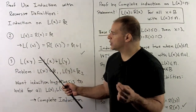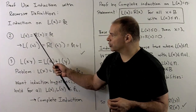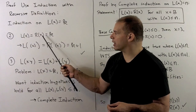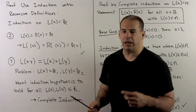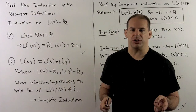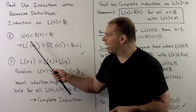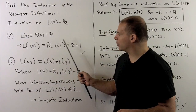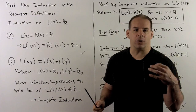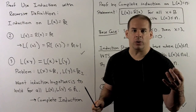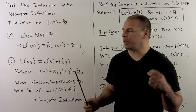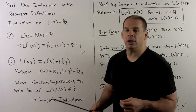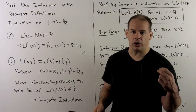For rule two, suppose I have a balanced string x with l(x) = r(x) = k — that's by assumption. If I use rule two, I just put parentheses around x. Now, l of (x) and r of (x) — we're just adding one to each of those. So they're both going to be equal to k+1, which is the result we want: they're equal to each other. So this step is well-suited for regular induction.